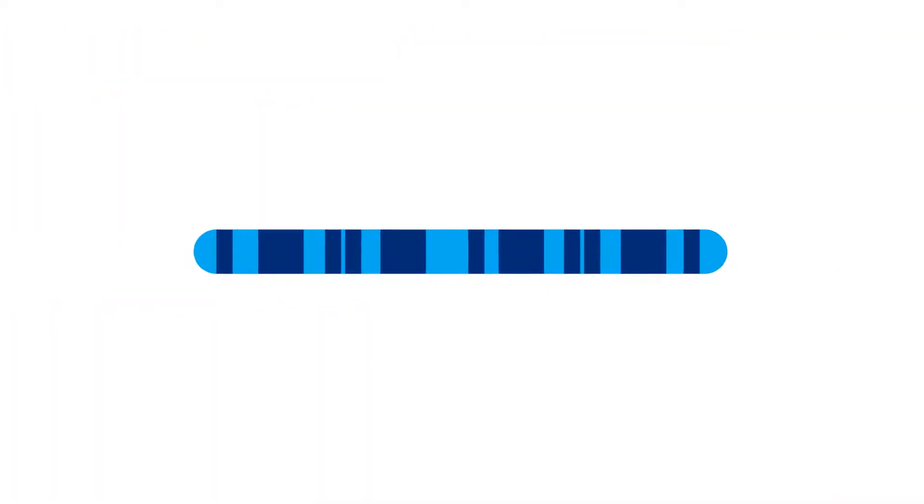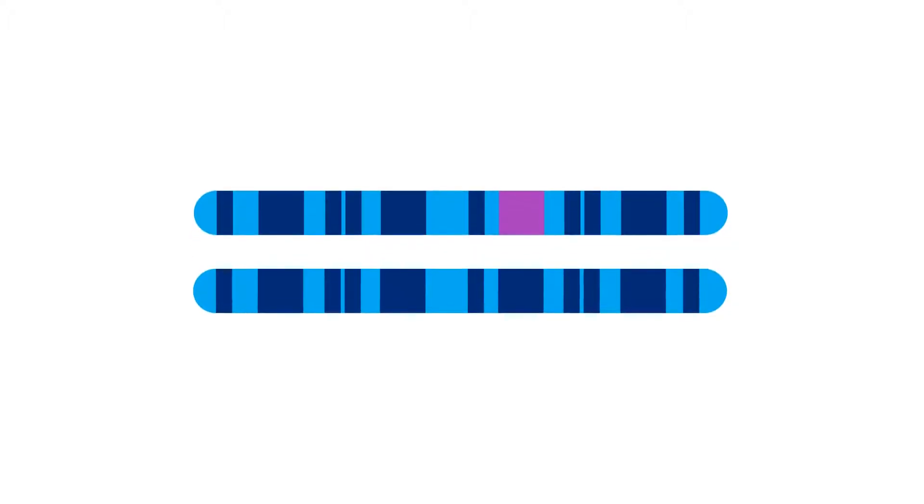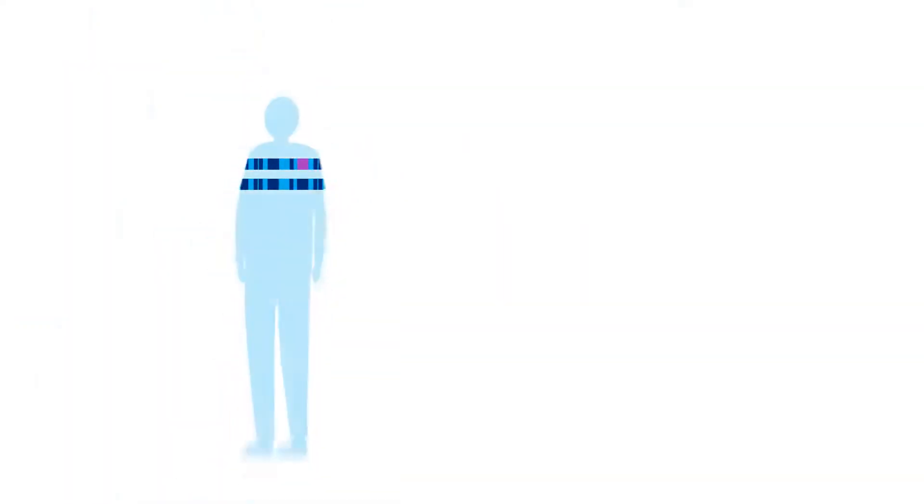While these changes are usually harmless, sometimes they can make the gene faulty. Genes come in pairs. Having one faulty copy of a gene and one working copy is called being a carrier. Being a carrier does not usually affect your own health.